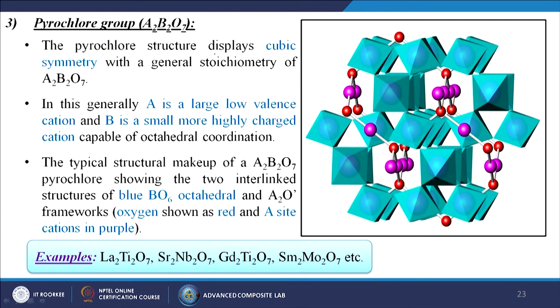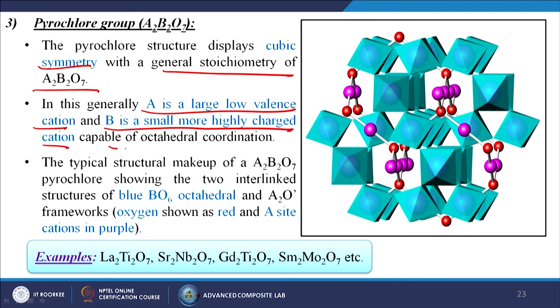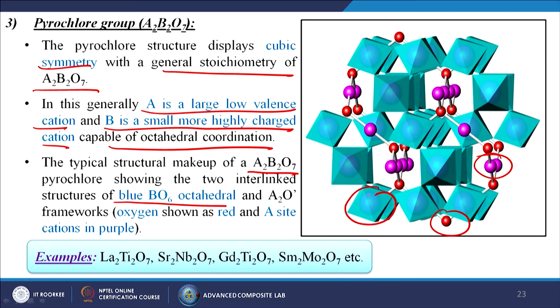The third group is the pyrochlore group: A₂B₂O₇. The pyrochlore structure displays cubic symmetry with A as the large low-valence cation and B as a small, more highly charged cation capable of octahedral coordination. The typical structure shows two interleaved structures of BO₆ octahedra (blue) and an A₂O framework (red oxygen, purple A-site cation). Examples include La₂Ti₂O₇, Sr₂Nb₂O₇, Gd₂Ti₂O₇, and Sm₂Mo₂O₇.